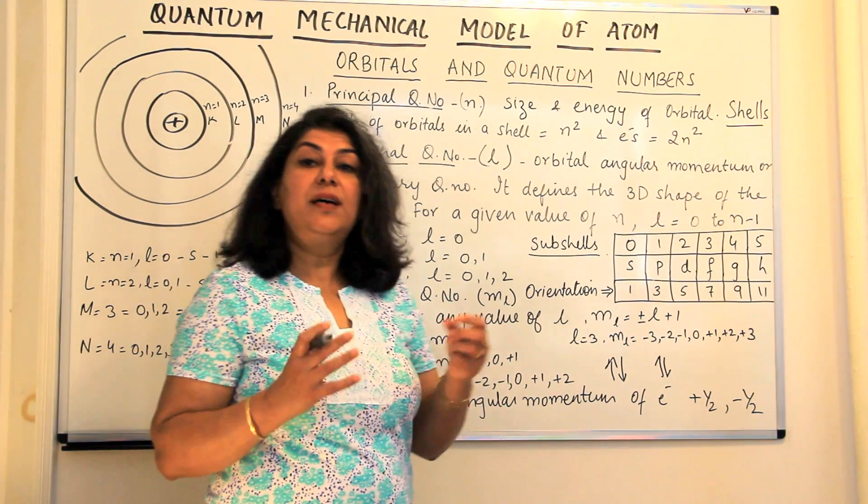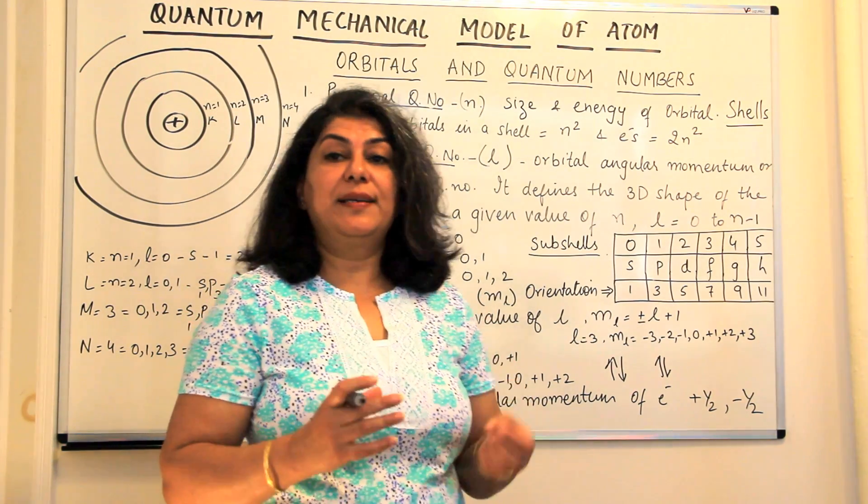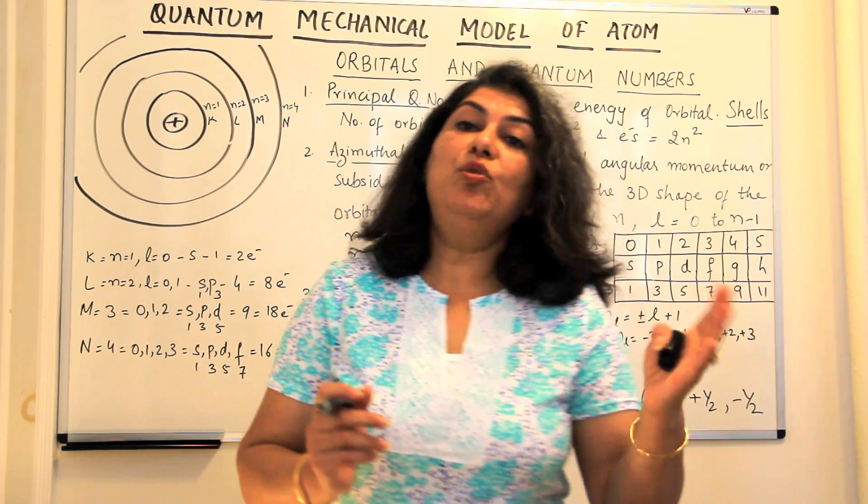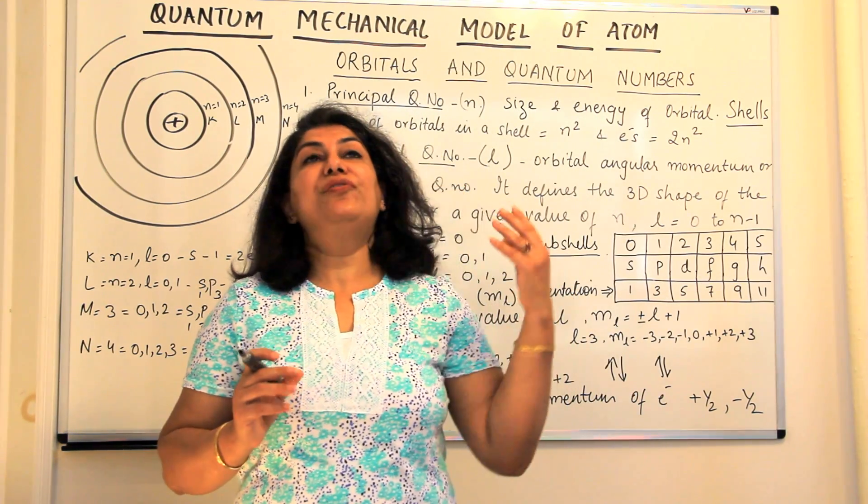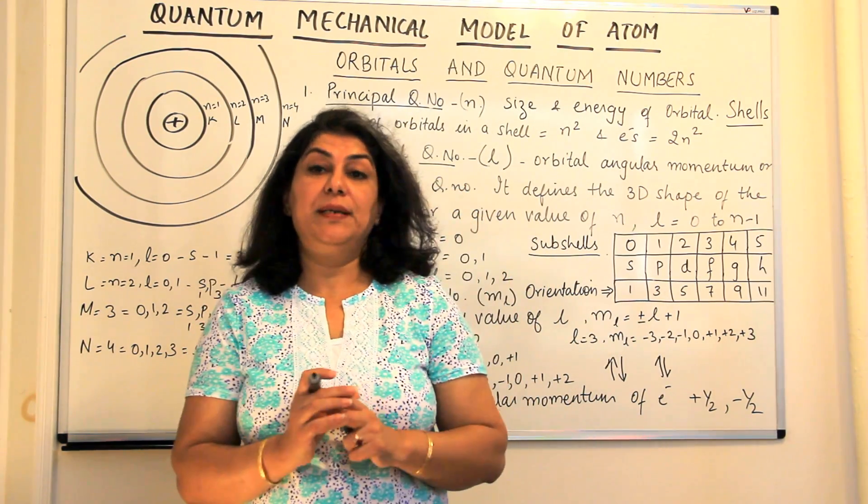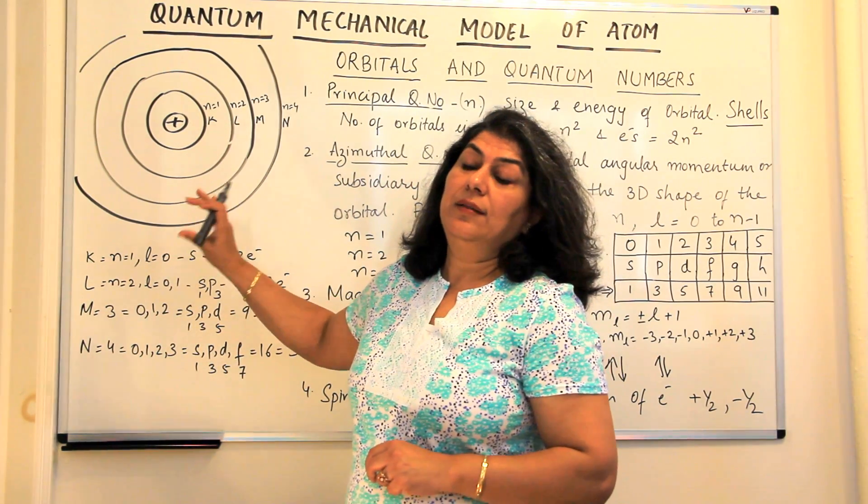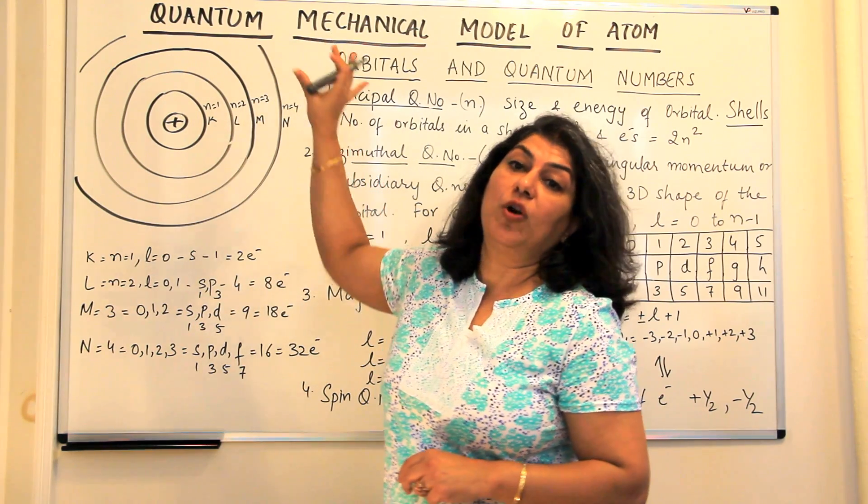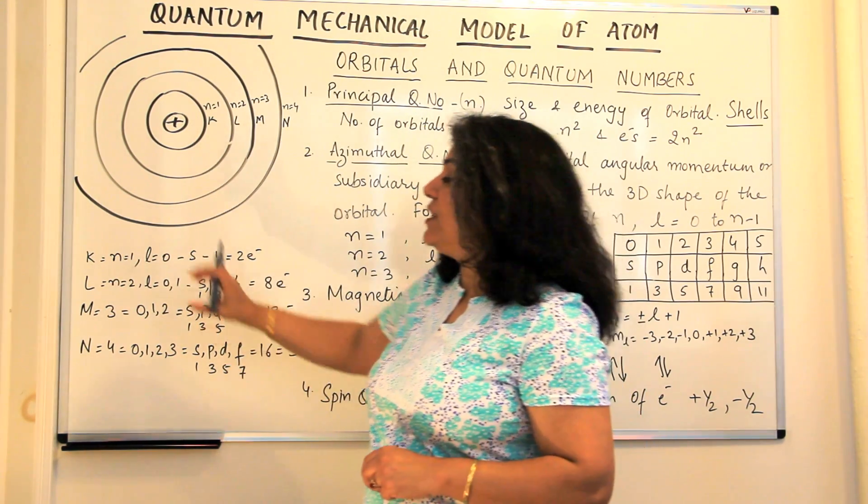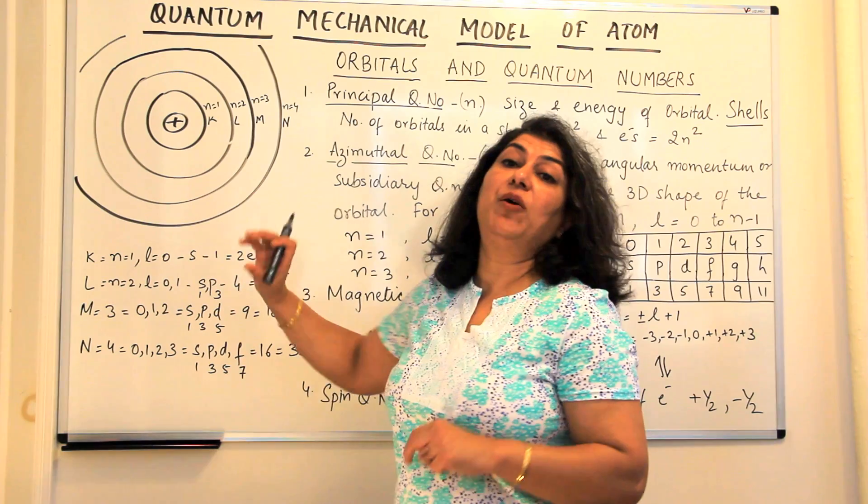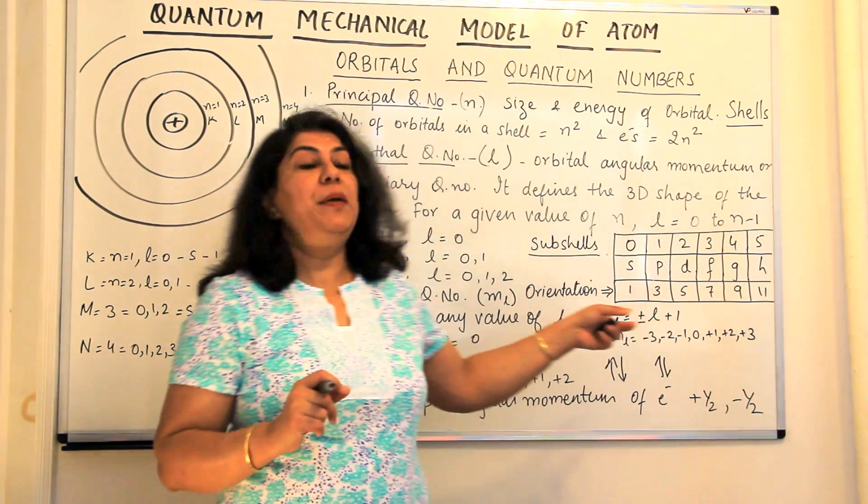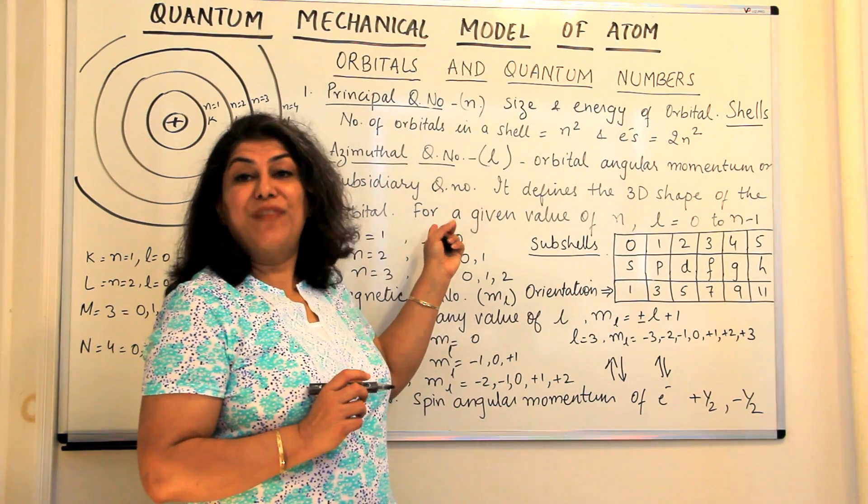We now come to the third quantum number which is the magnetic quantum number. Moving back to the analogy of an apartment building, the different floors of an apartment building, they are the shells, that is they are the principal quantum number.